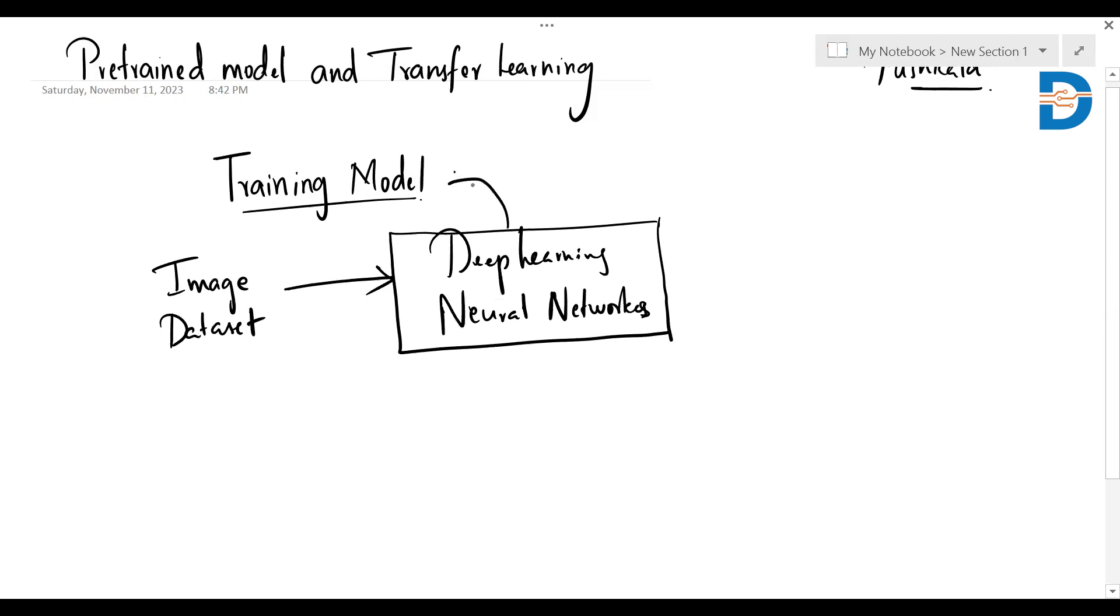Training is nothing but the neural network learning from image datasets. From this I can do certain tasks like object detection, facial recognition, or image classification. For some specific task, I'm going to train my neural network with a set of images. This is what is called training a model.